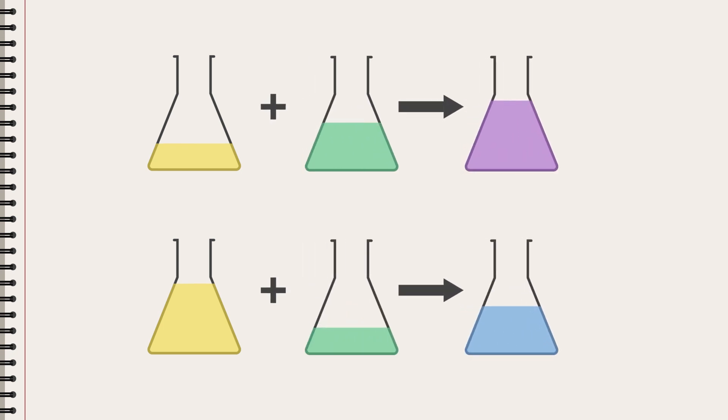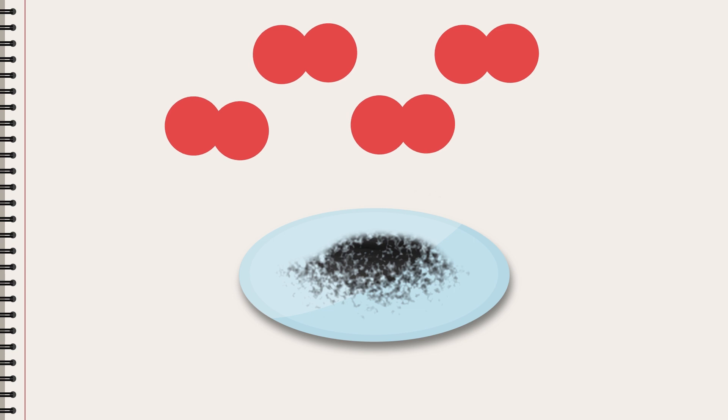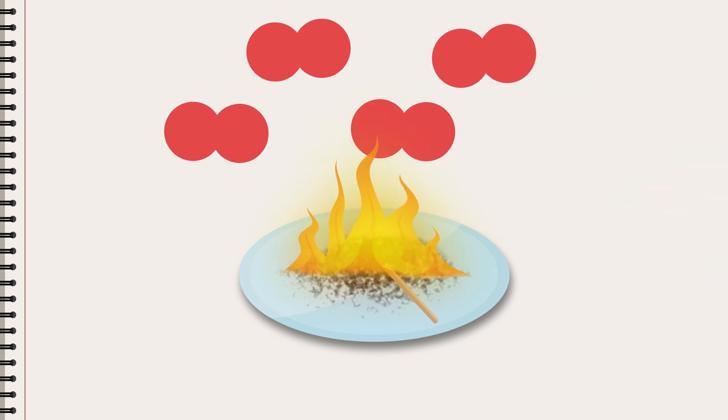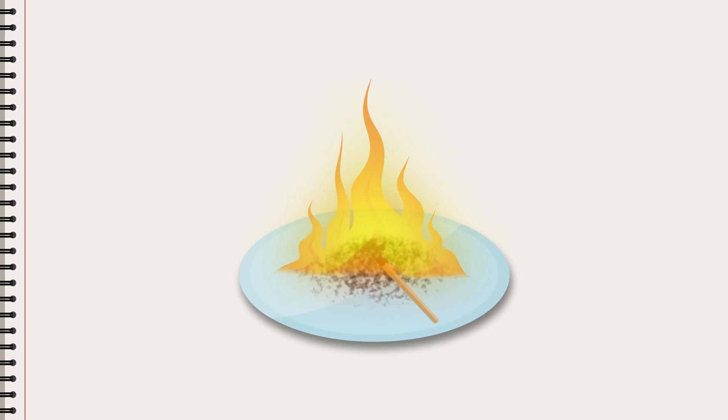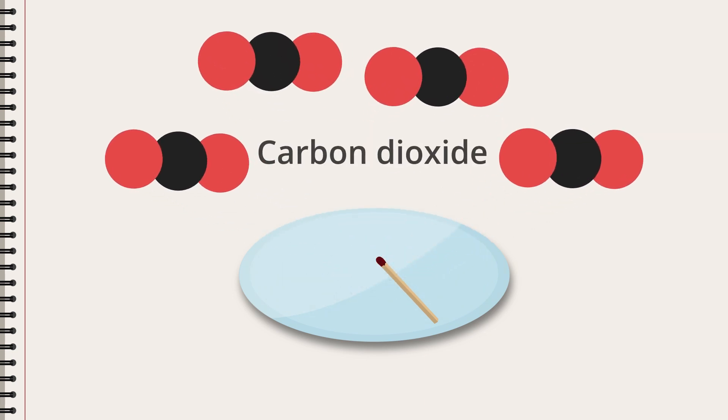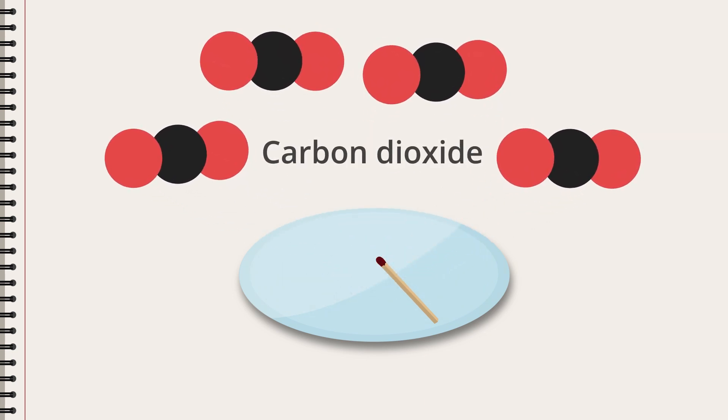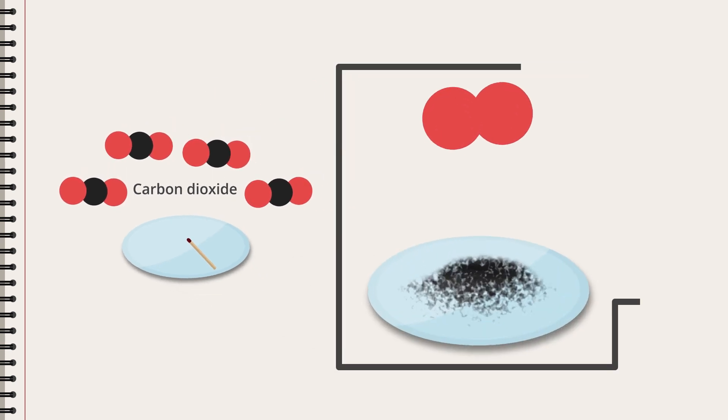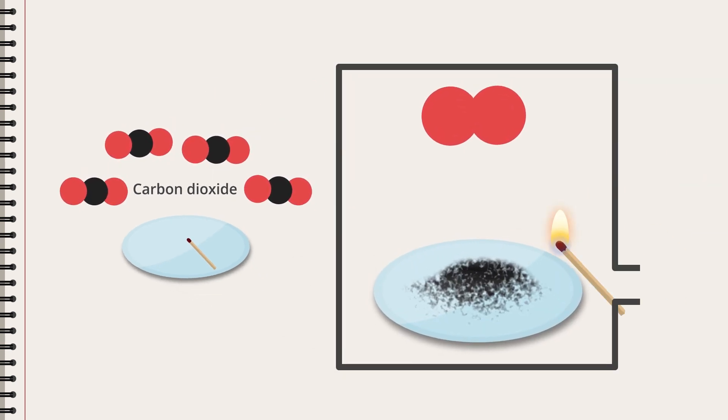There are reactions where the temperature can affect which substances are formed, and then there are reactions where it matters whether we use a larger or smaller amount of one of the reactants. That's the case with the graphite and oxygen example. Usually when there is plenty of oxygen, carbon and oxygen will form carbon dioxide when the graphite burns.